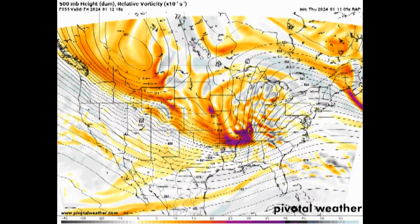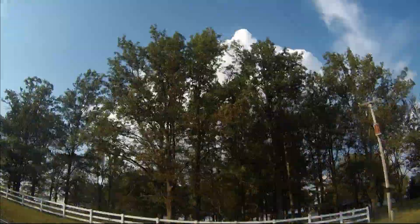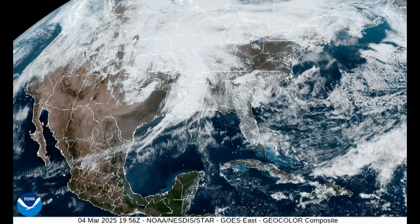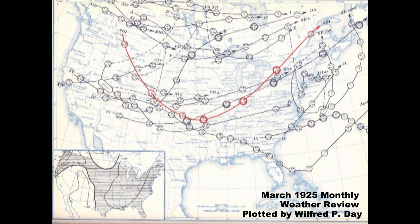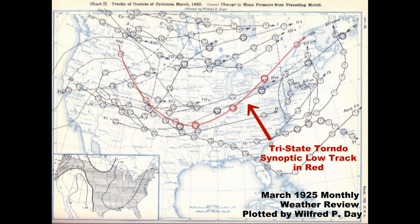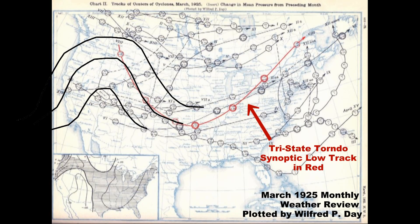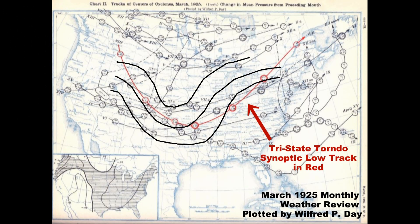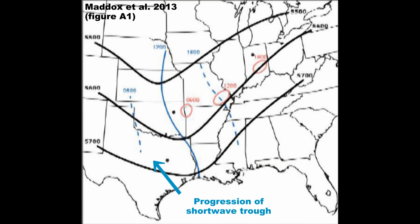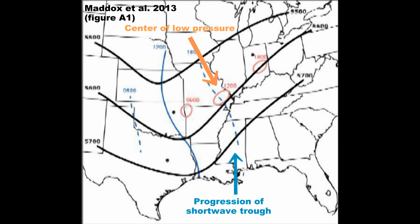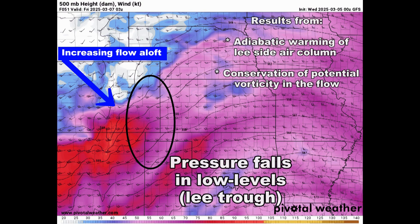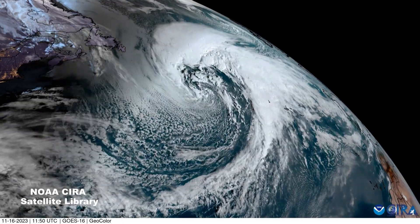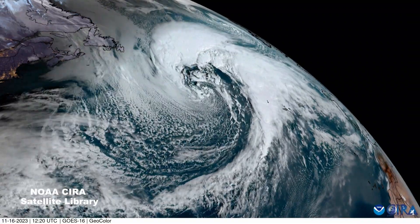When we talk about the synoptic scale in meteorology, we're referring to the large-scale features associated with weather systems: the jet stream, large-scale low-pressure systems, and frontal boundaries at the interface of different air masses. Cyclone tracks from March's Monthly Weather Review, as noted in Maddox et al. 2013, seemed to point toward a persistent ridge of high pressure on the west coast, with a broad trough downstream over the central United States. The authors note that the mid- to upper-level shortwave trough likely traversed this jet stream configuration before ejecting into the plains, helping to lower pressure within the lee trough over Colorado. Strengthening upper-level winds associated with jet stream disturbances often promote low surface pressure east of the Rocky Mountains. This set the stage for the synoptic cyclone which would eventually produce the Tri-State Tornado.